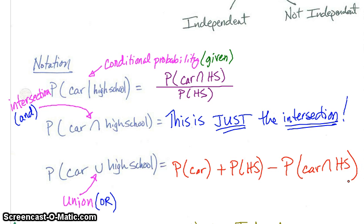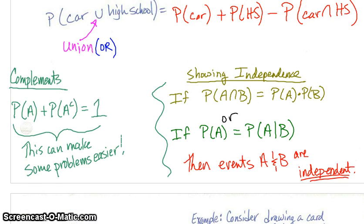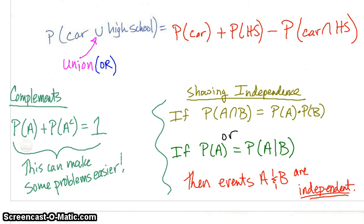These are important. We need to go over them and look at some examples. Muy importante: complements. We can use complements to make our life easier with probability. P(A) plus the complement — which means the opposite — must equal one. For example, the probability of owning a car plus the probability of not owning a car equals one. We might find it easier to solve for the complement and subtract from one.